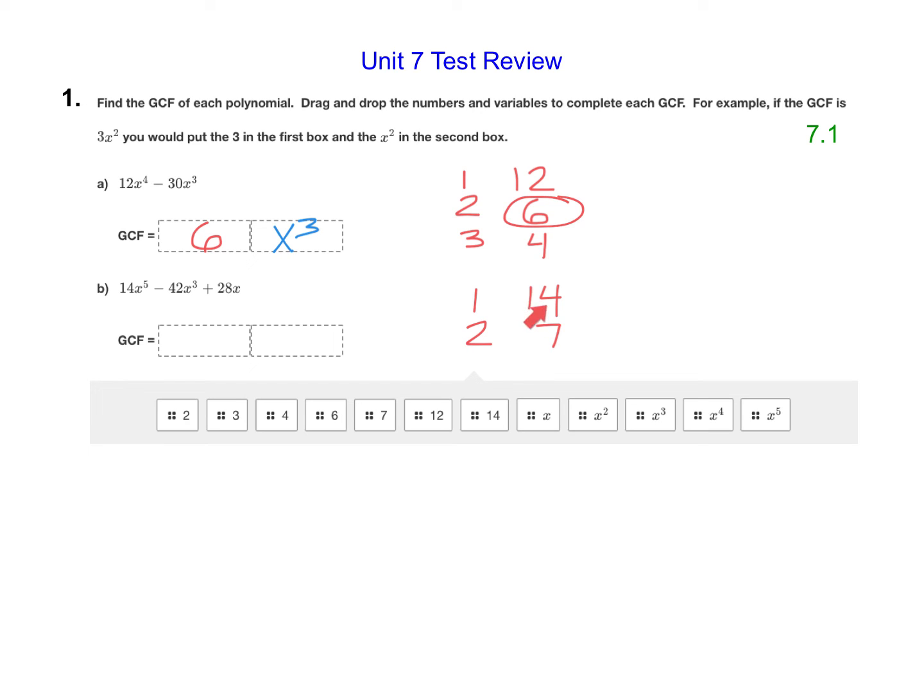Beginning at the largest number of 14, 14 does divide evenly into 42. 42 divided by 14 is 3, and then 28 divided by 14 is 2. So this GCF here is actually 14.